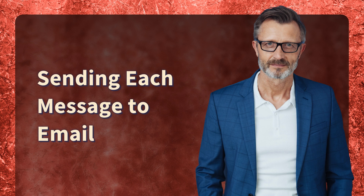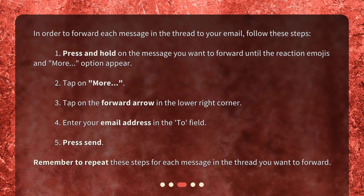Sending each message to email. In order to forward each message in the thread to your email, follow these steps. Press and hold on the message you want to forward until the reaction emojis and more option appear. Tap on 'More,' then tap on the forward arrow in the lower right corner. Enter your email address in the 'To' field and press send. Remember to repeat these steps for each message in the thread you want to forward.